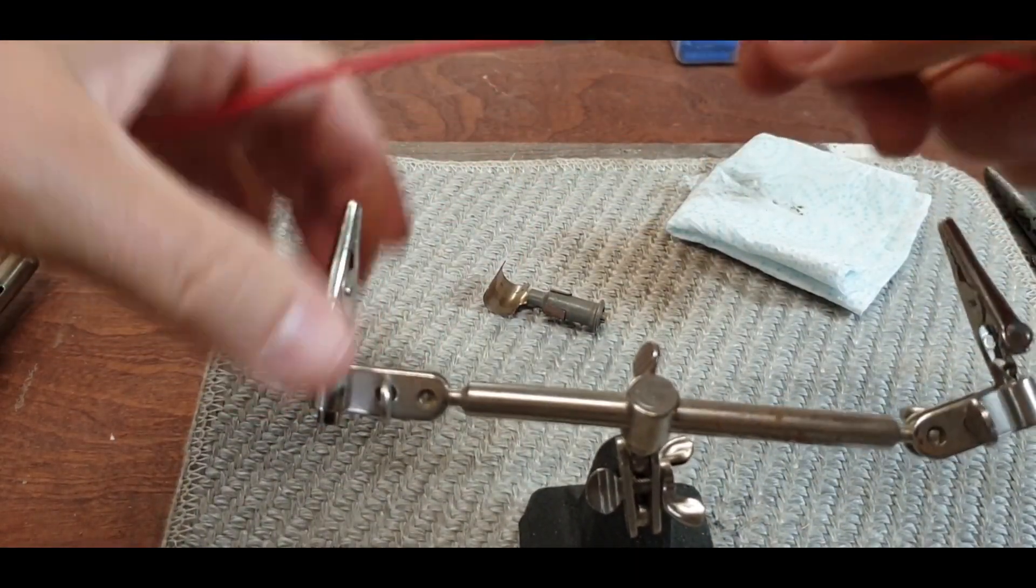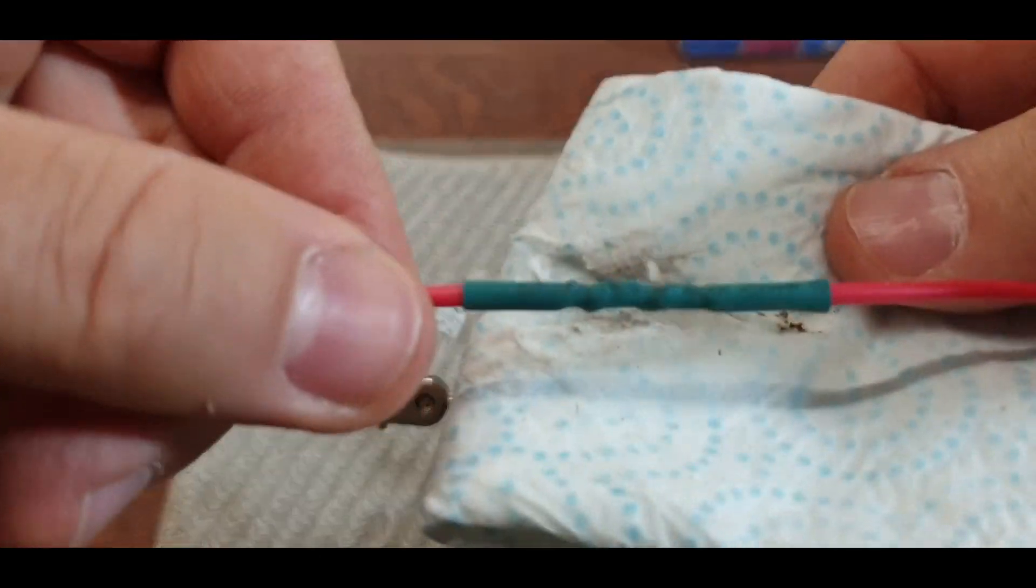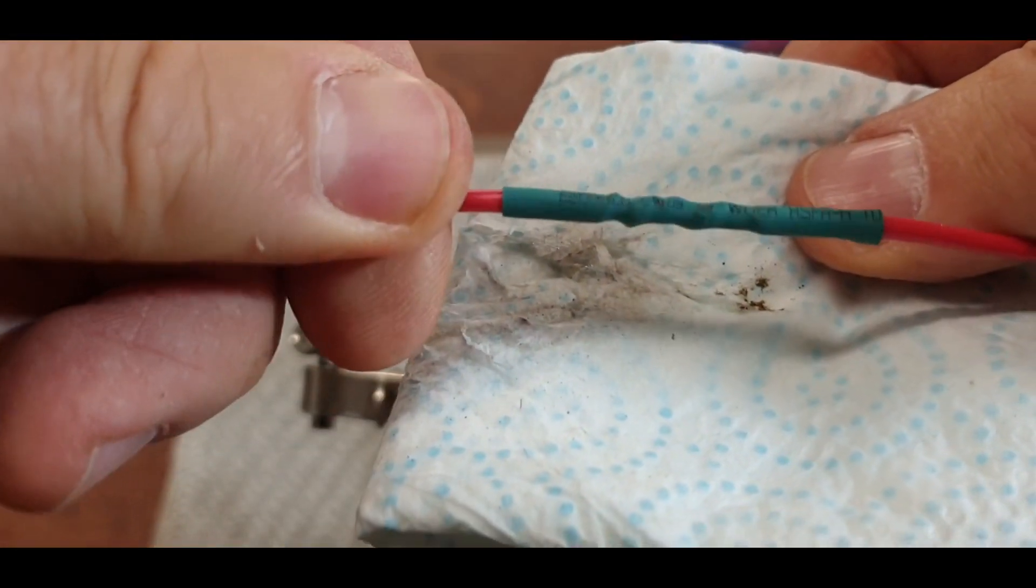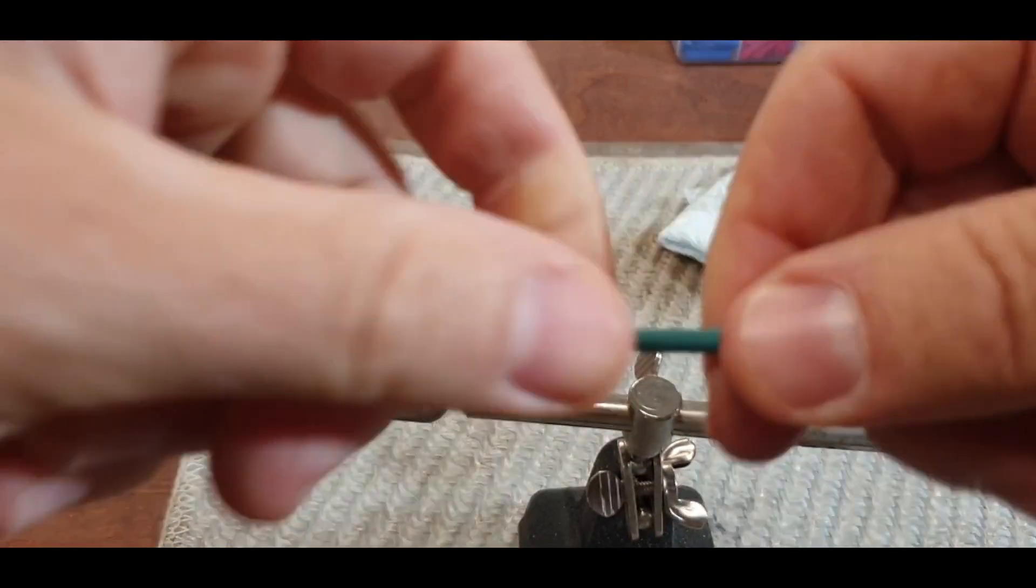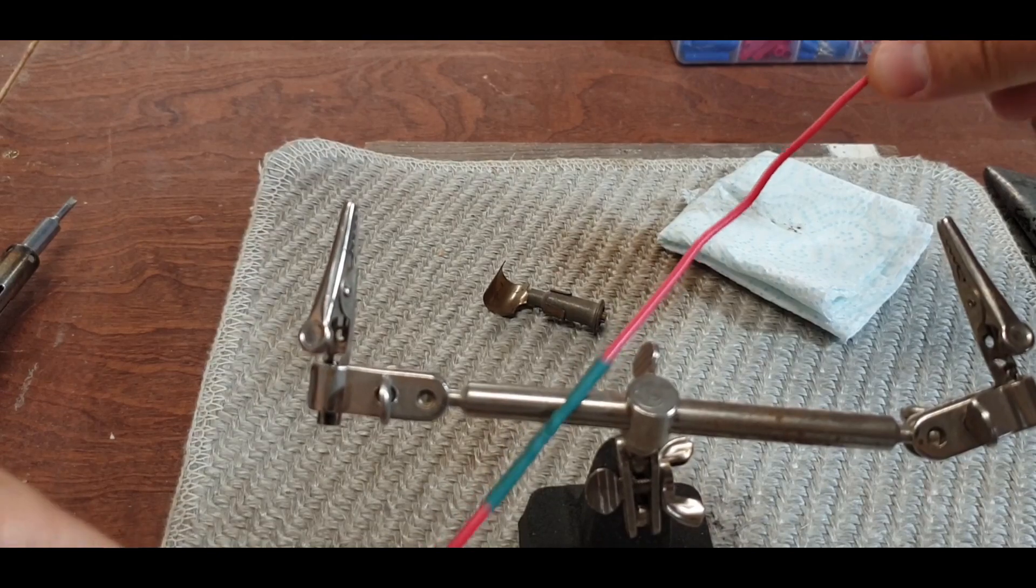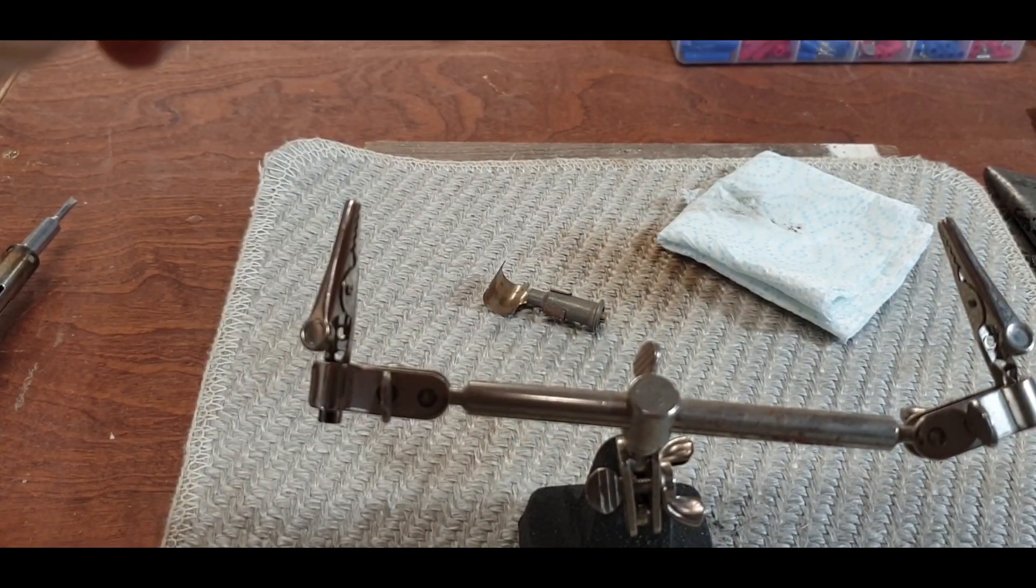And there we are. Nicely shrunk down. You can see the twist in the cable there. But that's not coming apart. And nothing's getting into it. And more importantly, it's not going to arc out on anything. And shouldn't rub together.